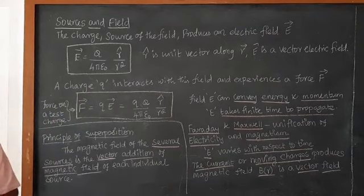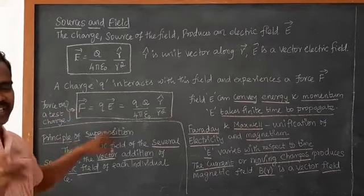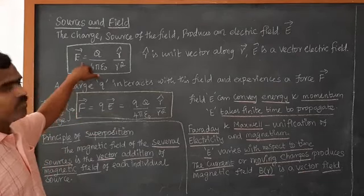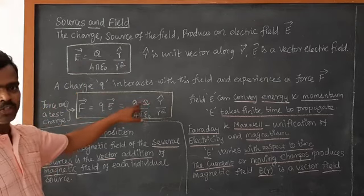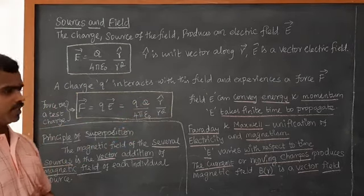The force on a test charge. We can write F is equal to QE. So Q we have, E by E we have here. So substitute over here. So small Q capital Q divided by 4 pi epsilon R, R cap divided by R square.